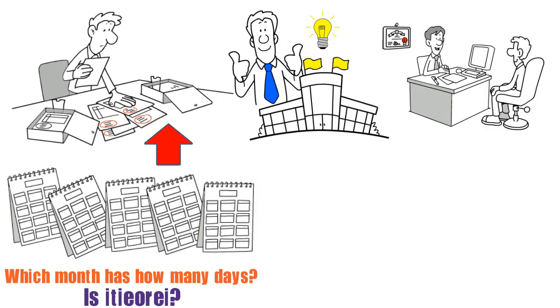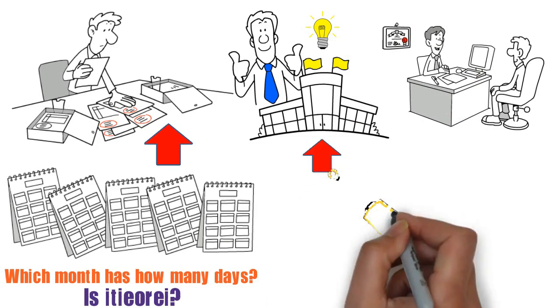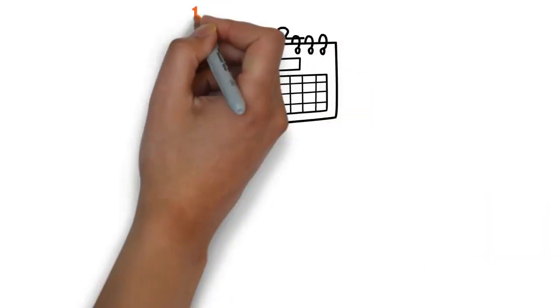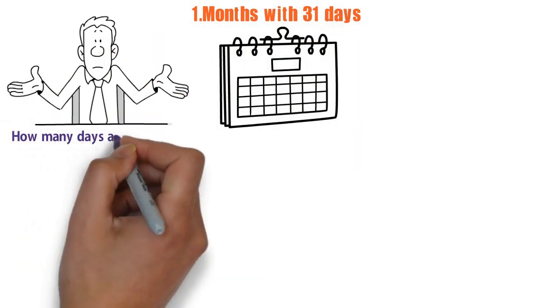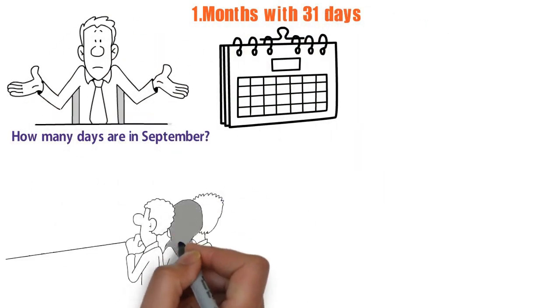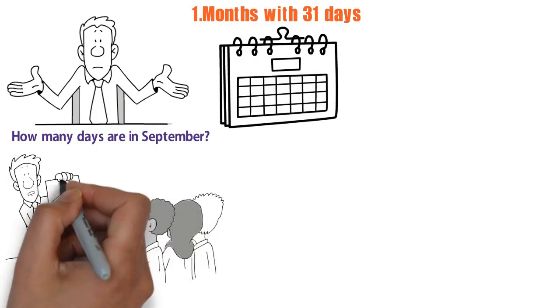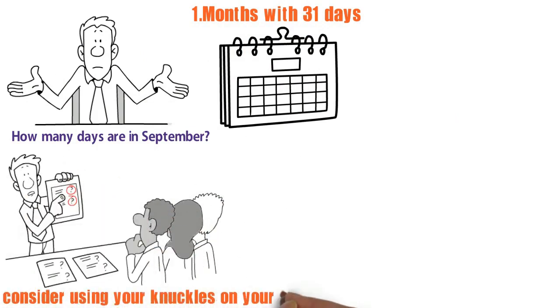1. Months with 31 days. How many days are in September? You have two choices for figuring it out. First, consider using your knuckles on your hands. Start